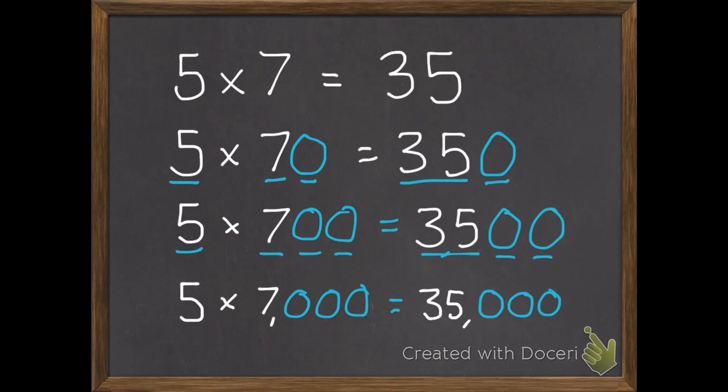So we can continue this pattern on forever. Five times seven is thirty-five, and however many zeros—if there were ten zeros, we'd add ten zeros. If there's three, we add three.